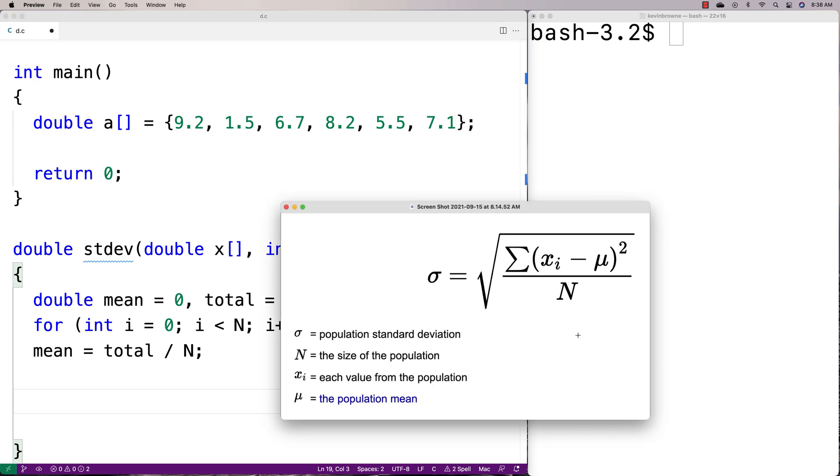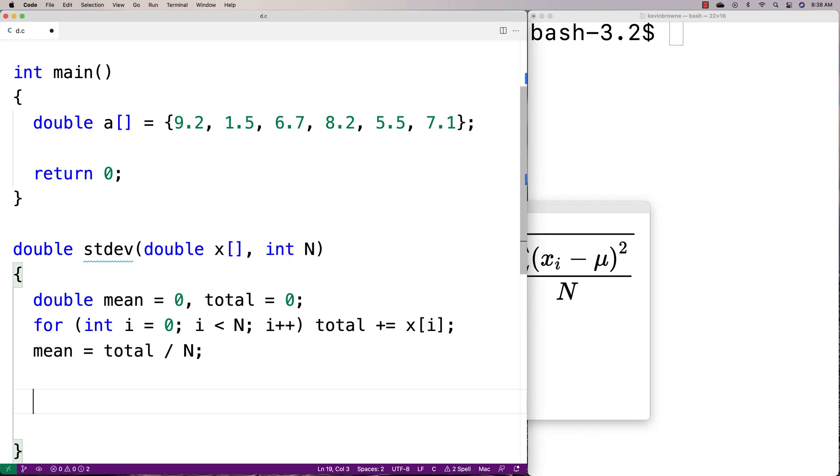The next step is a little trickier. We need to do a summation of each element minus the mean taken to the power of two. We'll need another loop to look at each element in the array, but this time we'll take each element, subtract the mean, and then take it to the power of two.